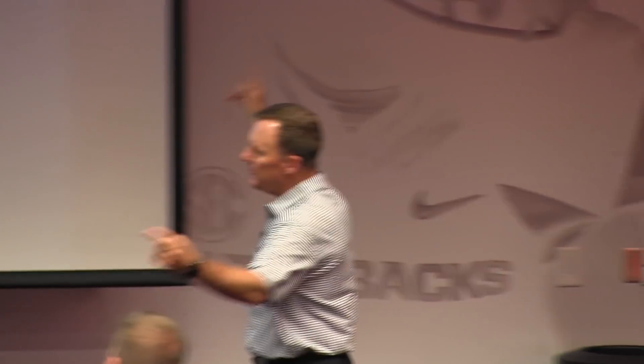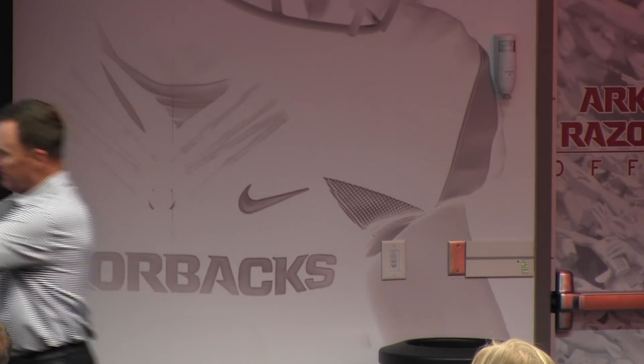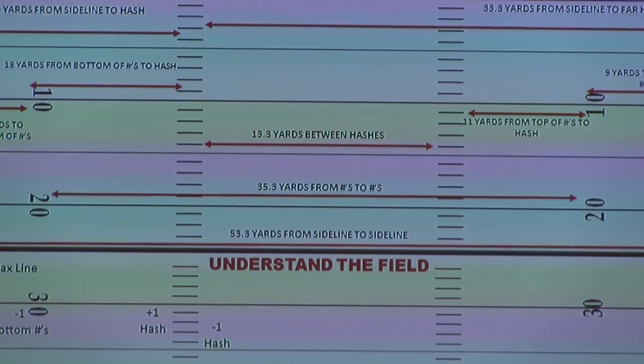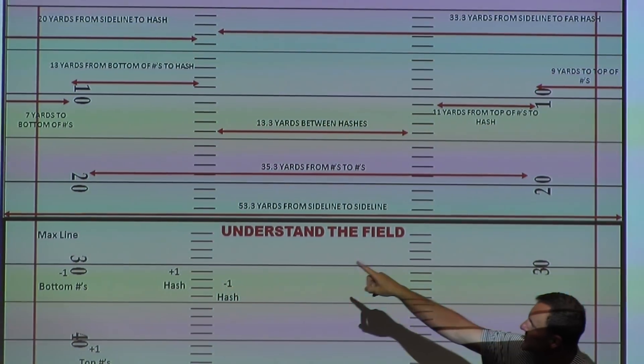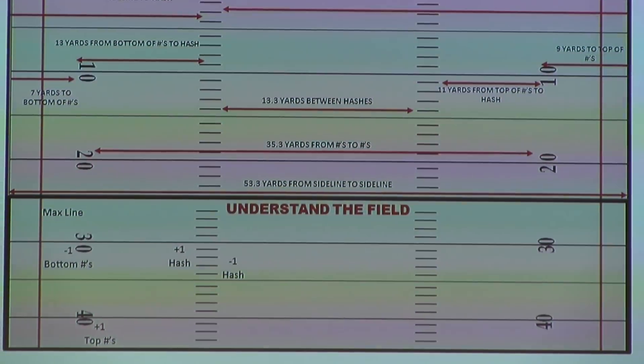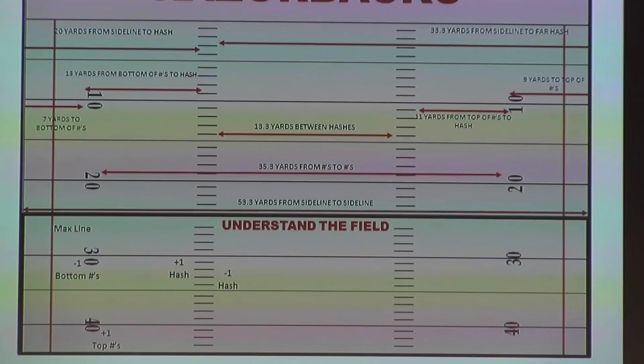From top of number to top of number is 35 and a third yards. Outside of that, we want our young men to understand that's the width of the football field from inside those top numbers. From the bottom of the numbers to the sidelines is seven yards in college. In the NFL it's different — it's wider. It moves out.